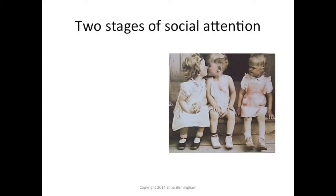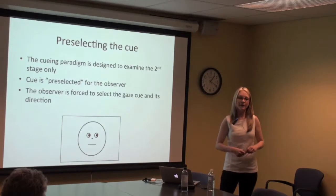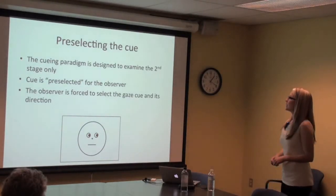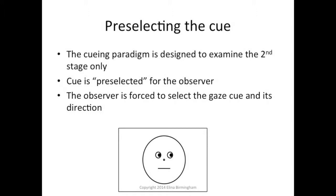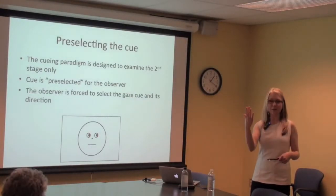Consider a situation: she's not very happy, and you can tell she's looking at someone and she's pretty mad. The first stage: we select her eyes — we orient our attention to her eyes and pick them out. Then we shift our attention to where those eyes are looking. These are two distinct stages in the social attention process. However, the cueing paradigm is only designed to examine the second stage — where people orient their attention from the social cue to wherever it's looking.